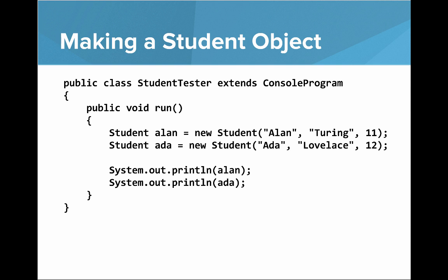So I just want to show you what a full program looks like that makes those two student objects. We have our student tester program. And in our run method, we make a new student for Alan, we make a new student object for Ada, and then we can print out those objects. And I'll show you what that does in our editor.